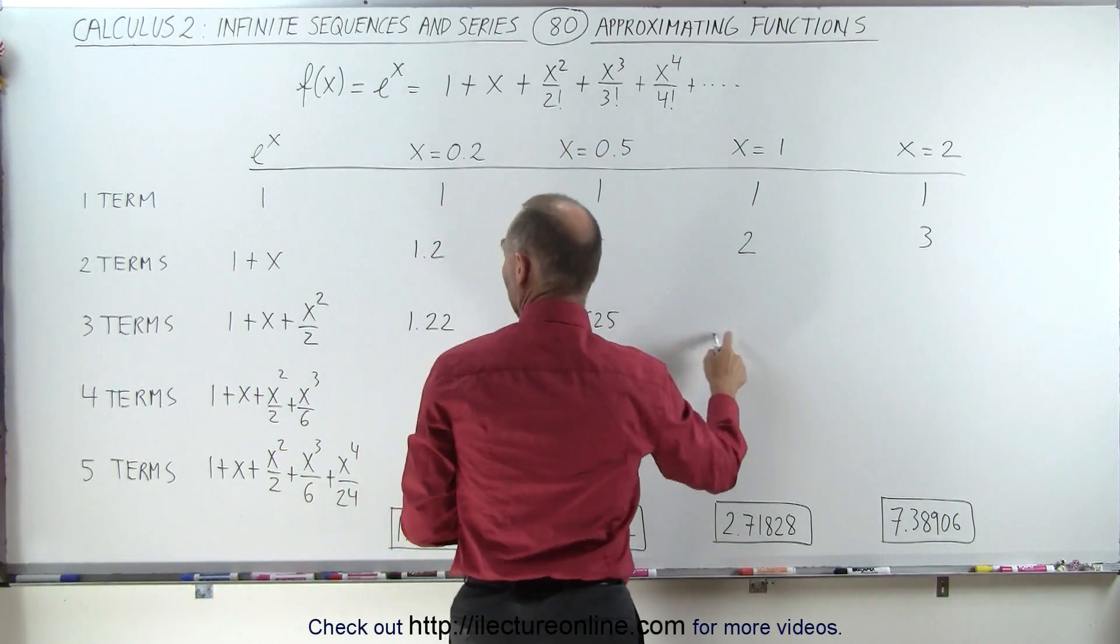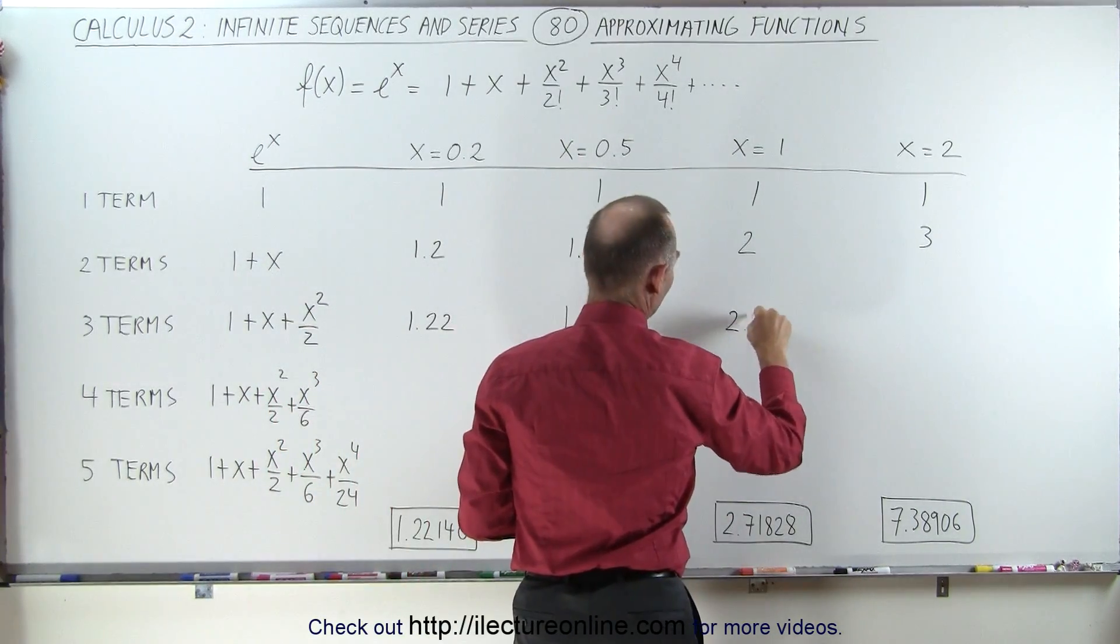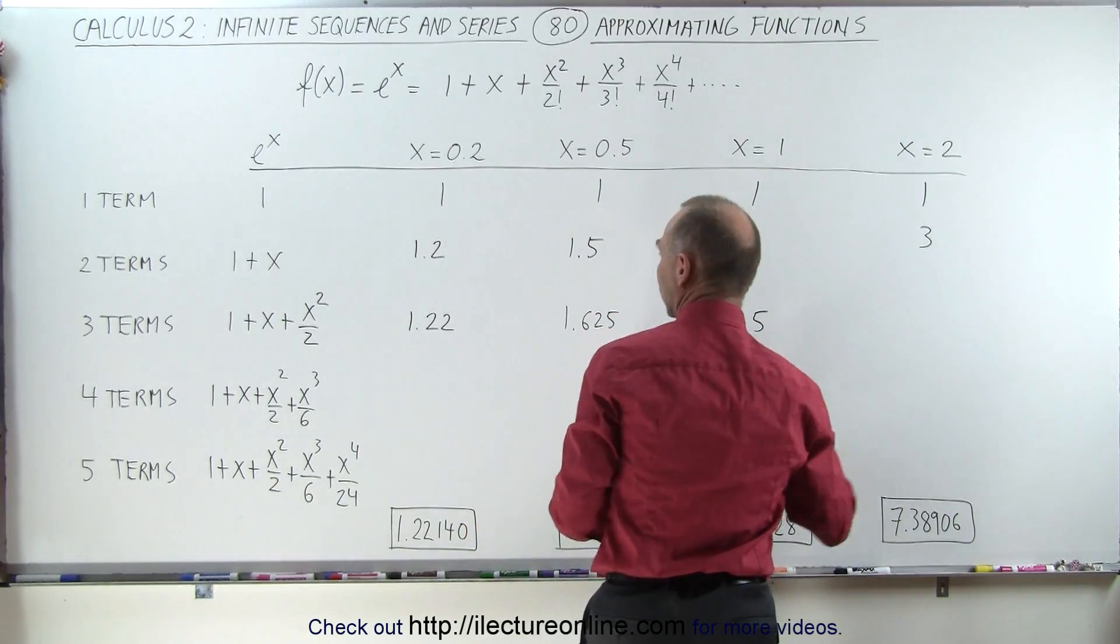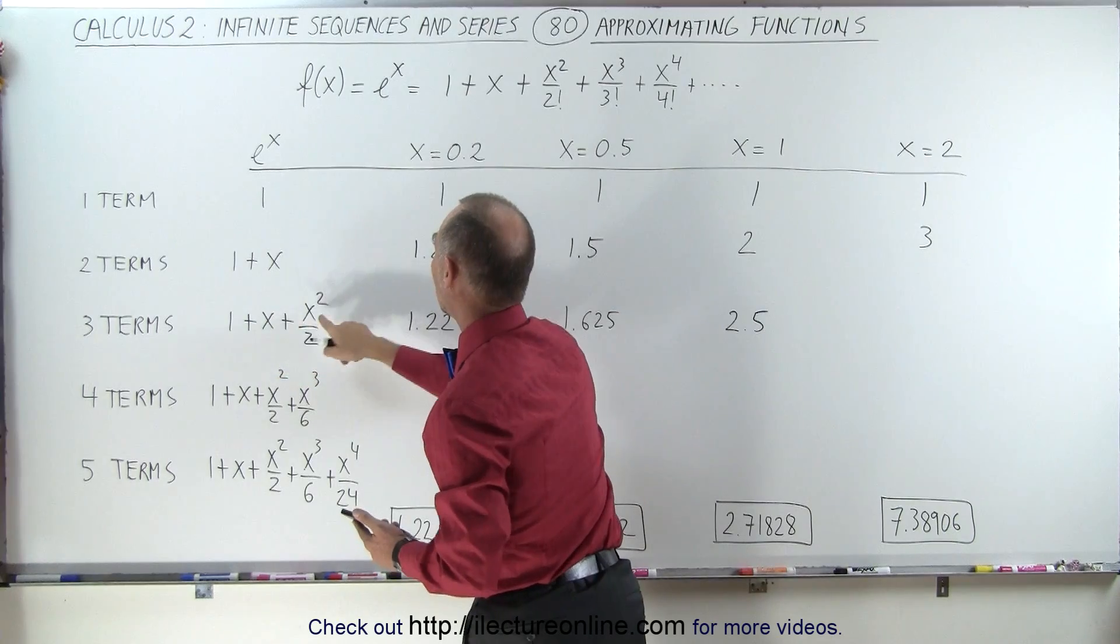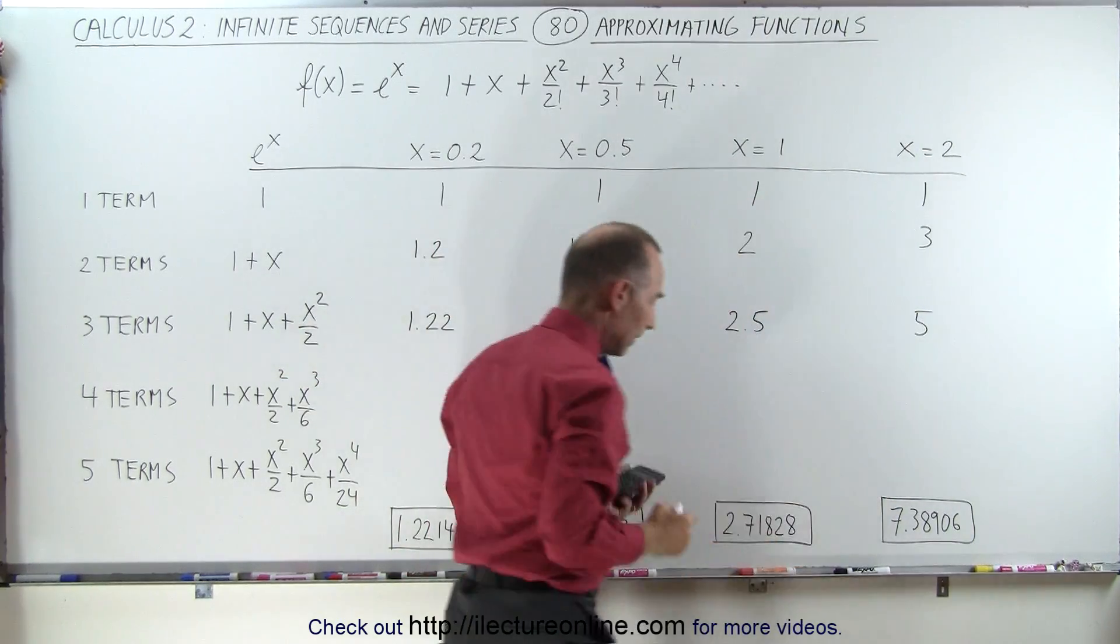Now when x equals 1, then we get 1 plus 1, that's 2, plus 1 half, that's 2.5. So not too close, but we're getting there. And when x equals 2, we get, that's 3 plus 4 over 2, that would be 5.